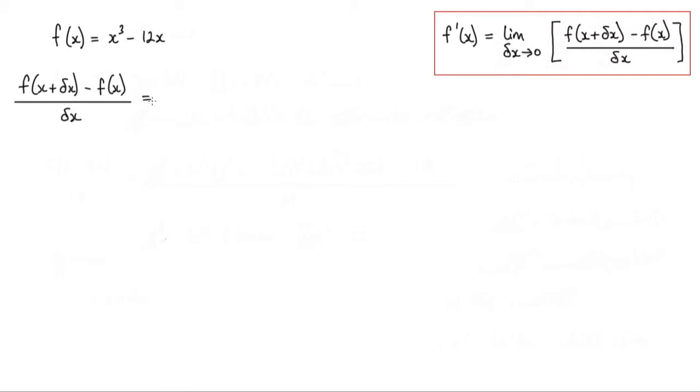Well what's that equal to? Well if we look at this function here, wherever we see an x we have to replace the x by x plus delta x. So this here would become x plus delta x cubed minus 12 times x plus delta x. So that's taking care of this part here.